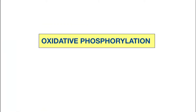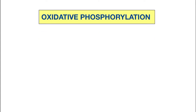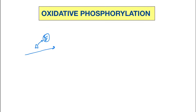Hello friends, today our topic is oxidative phosphorylation. I request you to please see the electron transport chain video before seeing oxidative phosphorylation. First see the electron transport chain, then we will be able to understand oxidative phosphorylation. In the ETC I have told you that through the chain the energy is getting released. Now let's see how the oxidative phosphorylation occurs.